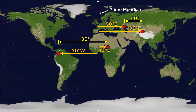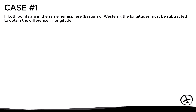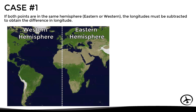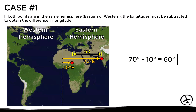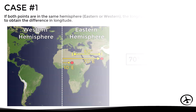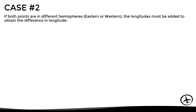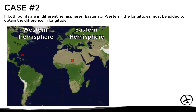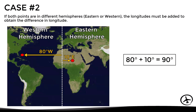As with latitude, to obtain the difference in longitude these must be added or subtracted depending on the case. If both points are in the same hemisphere, then the longitudes must be subtracted to obtain the difference in longitude. So in this example, since both points are in the eastern hemisphere, we subtract the longitudes and obtain a difference in longitude of 60 degrees. On the other hand, if both points are in different hemispheres, the longitudes must be added — so in this case we just add the longitudes and obtain a difference in longitude of 90 degrees.